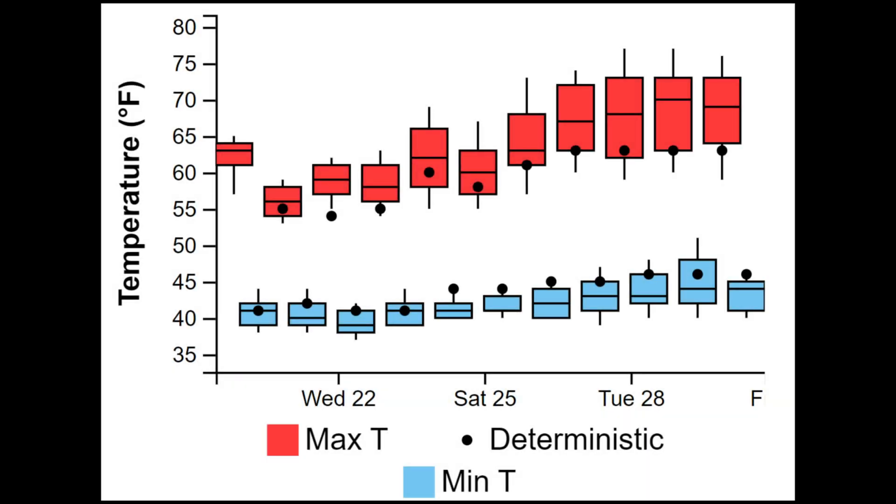You may have already encountered cases where the NBM deterministic or operational value doesn't line up with the median or is completely off of the distribution when looking at a box and whisker plot in the NBM 1D viewer.